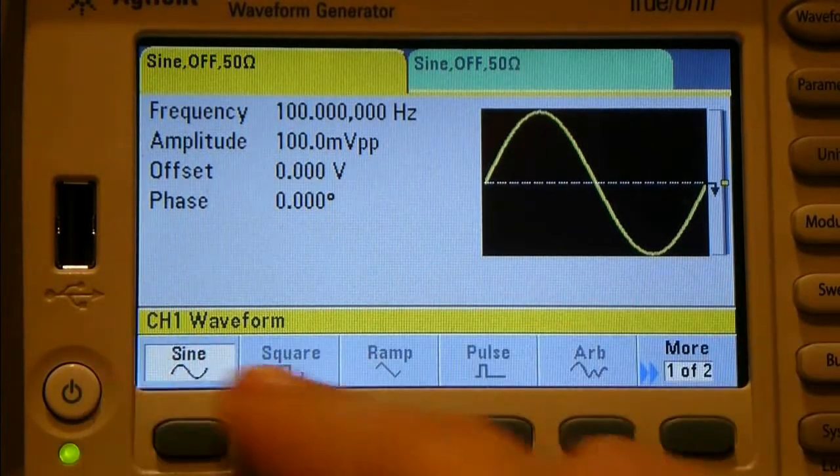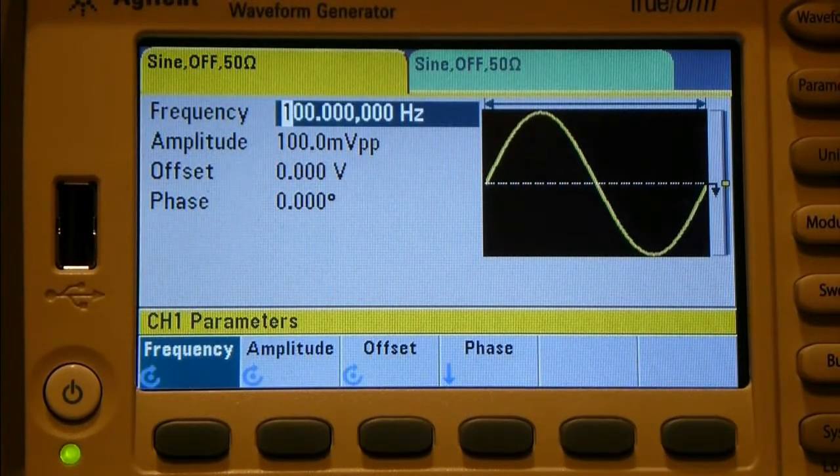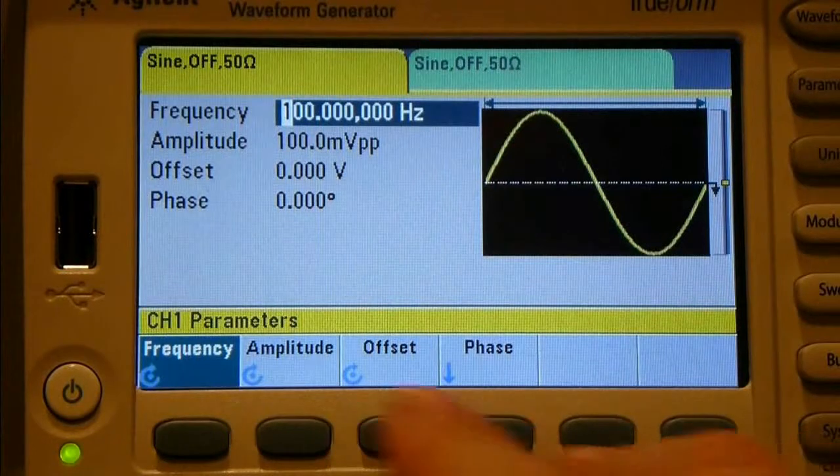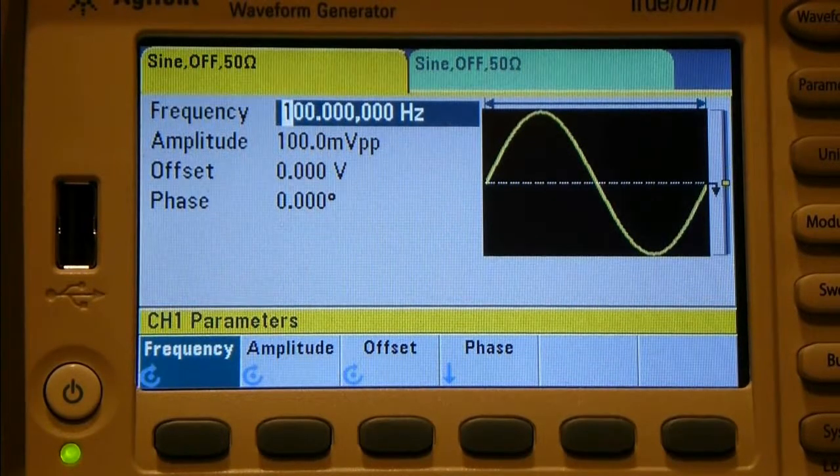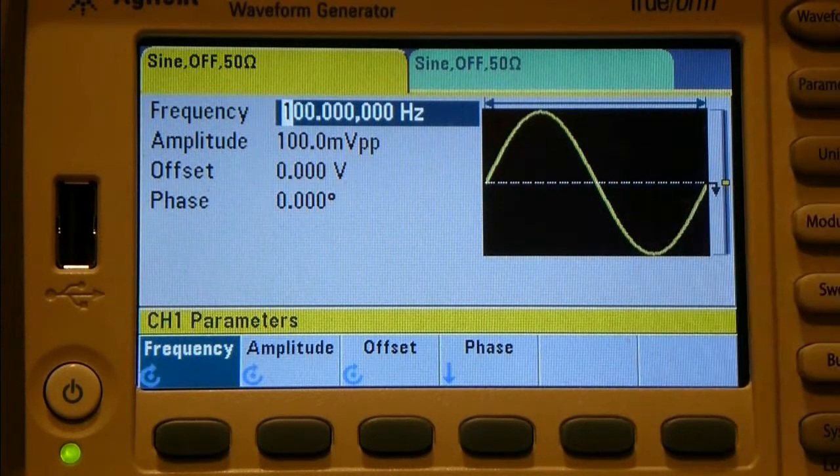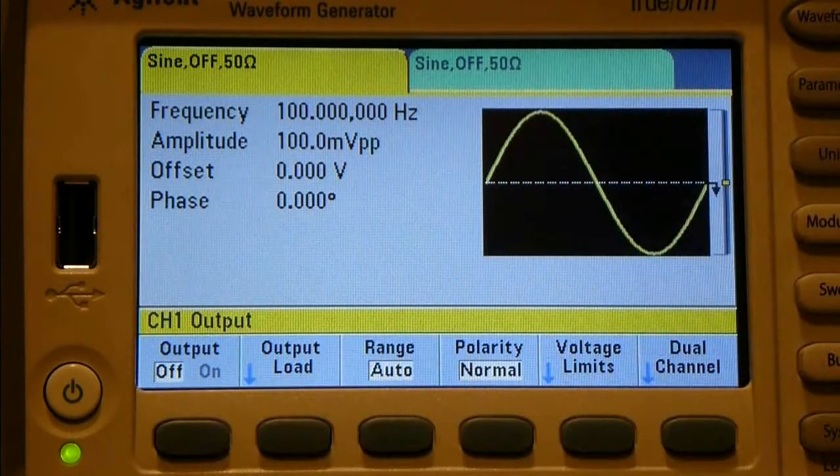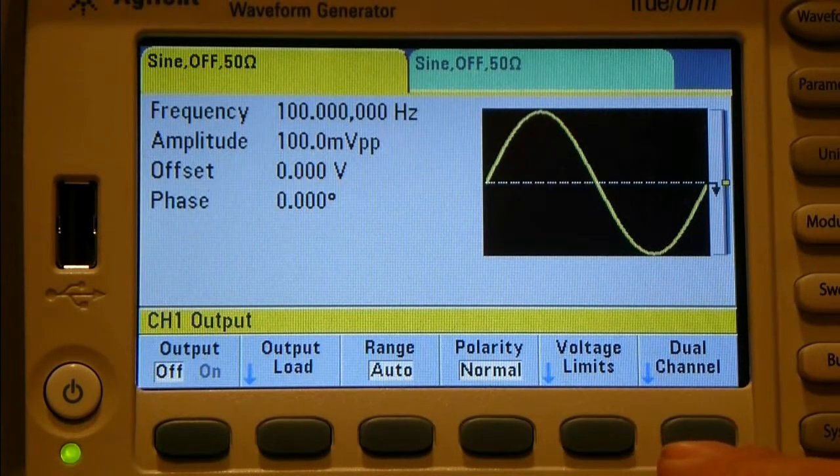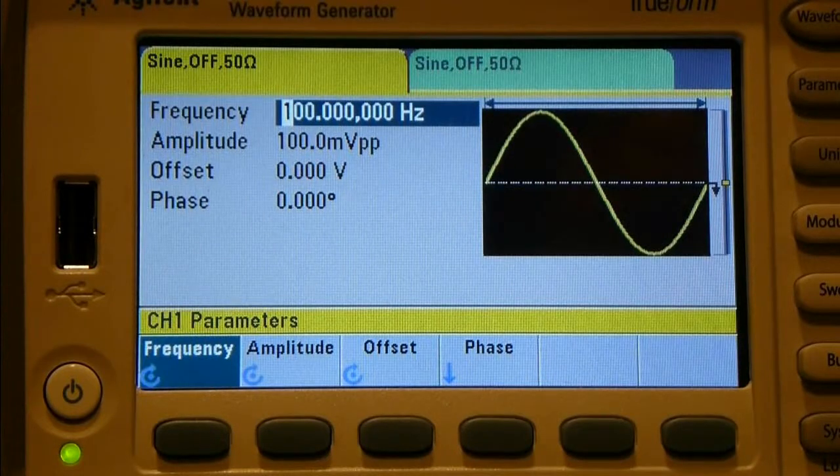By default, when you press waveform, you get the different waveforms that you can select, which we've already gone through. If I push the next button, it's jumping me to the parameters for the same waveform. So now you've got the four options: frequency, amplitude, offset, and phase.